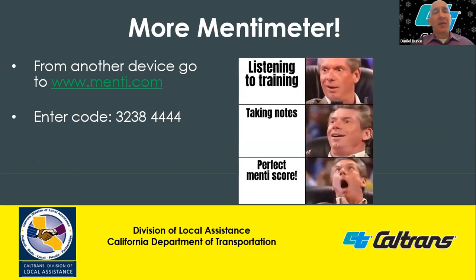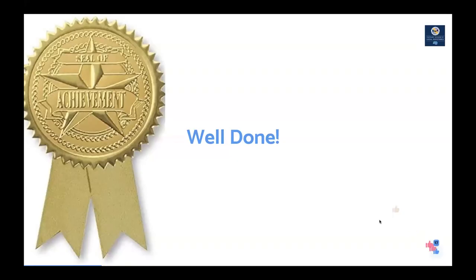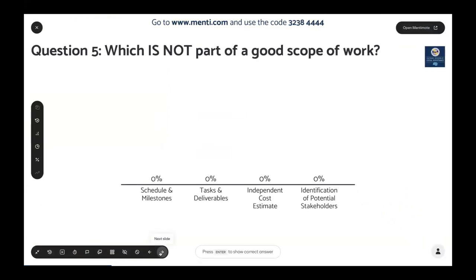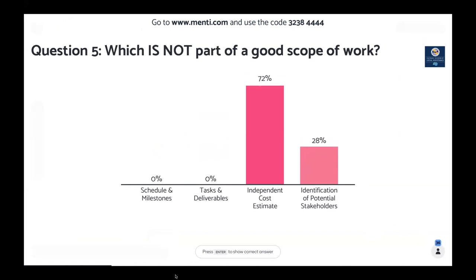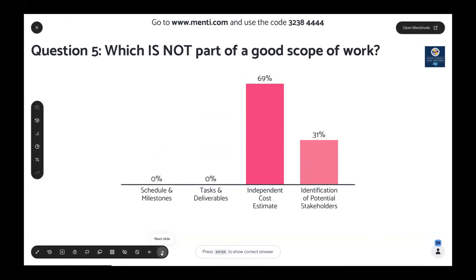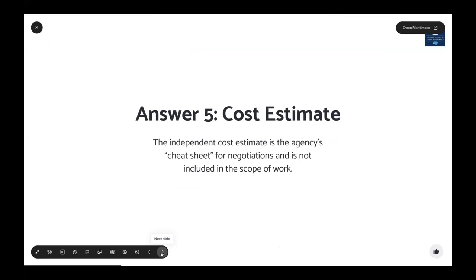Mentimeter question five: which is not part of a good scope of work? Choices are scheduling milestones, tasks and deliverables, independent cost estimate, or identification of potential stakeholders. The correct answer is independent cost estimate. The independent cost estimate is the agency's cheat sheet for negotiations and is not included in the scope of work. The consultant has already submitted their cost estimate or bid package before negotiations occur, so it is not included within the scope of work.